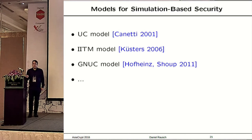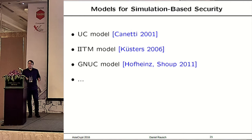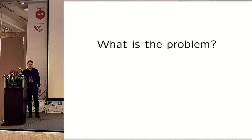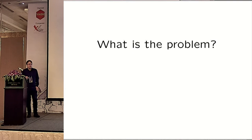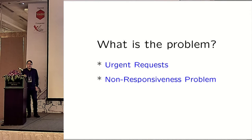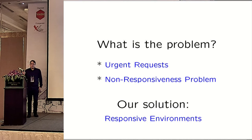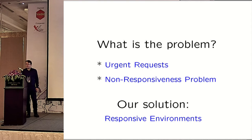Our work is model-independent. We have exemplified this by applying it to three major models. What exactly is the problem we addressed? I will explain what urgent requests are and why they cause what we call the non-responsiveness problem, and then show how we solve this problem entirely by proposing responsive environments.